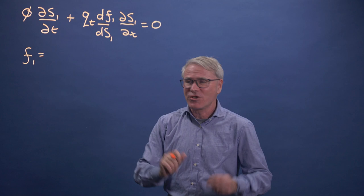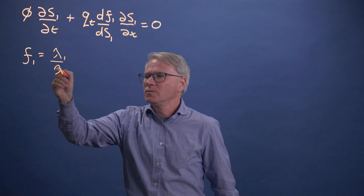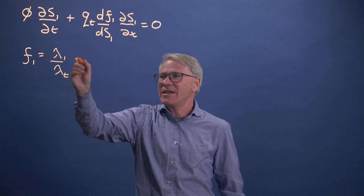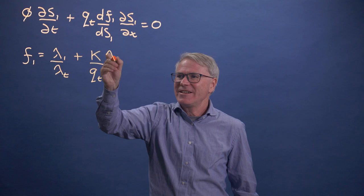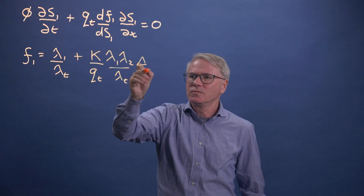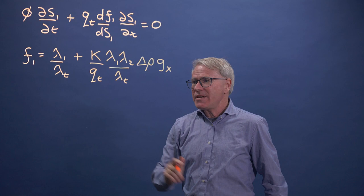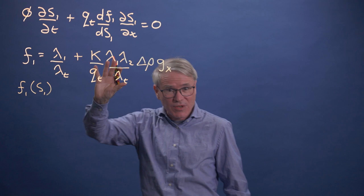So this fractional flow is just the ratio of the mobilities. The Qt has been taken out, and then I have to put it back in here as K λ1 over λt, times the density difference Δρg. This is essentially a function of saturation, a very complex function of saturation.